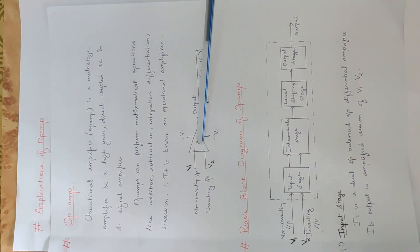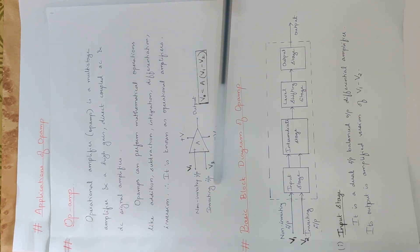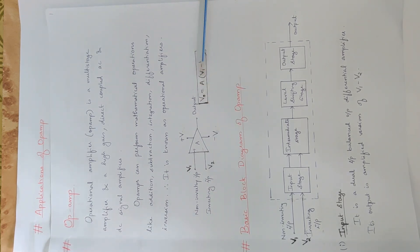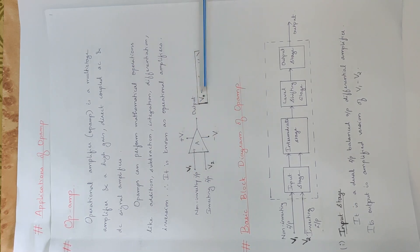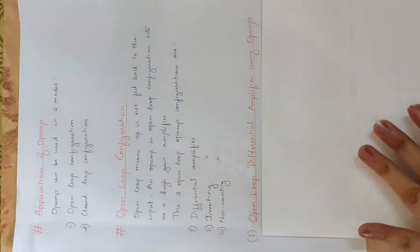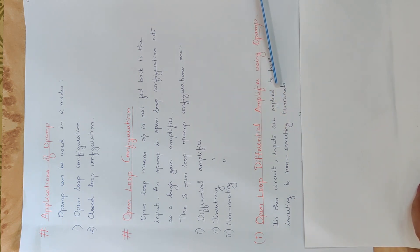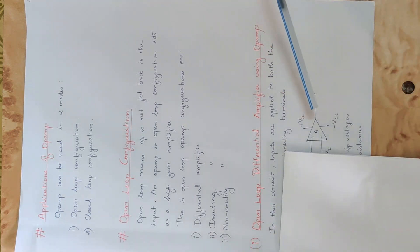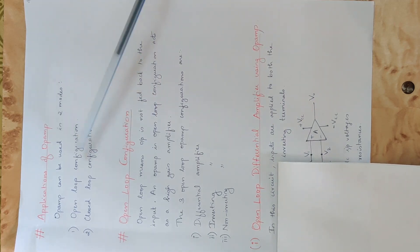The triangle represents the gain of the op-amp. It has two input terminals: V1 is the non-inverting input (+) and V2 is the inverting input (−), and one output terminal. The basic equation is: Vo = A × (V1 − V2). In a differential amplifier, we amplify the difference of the two inputs. Inputs are applied to both the inverting and non-inverting terminals.